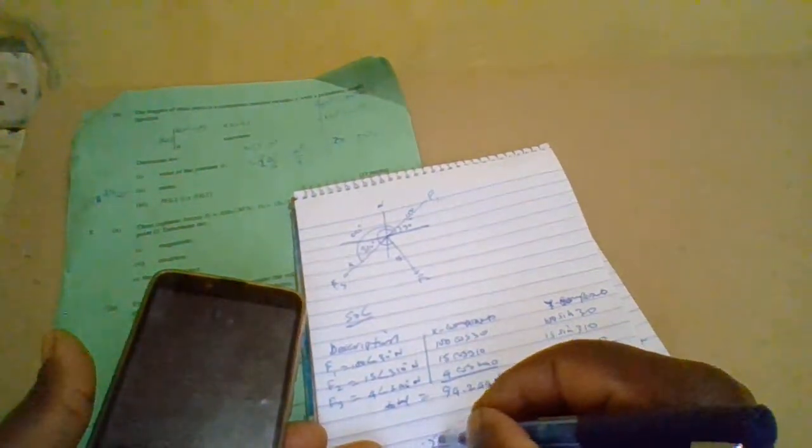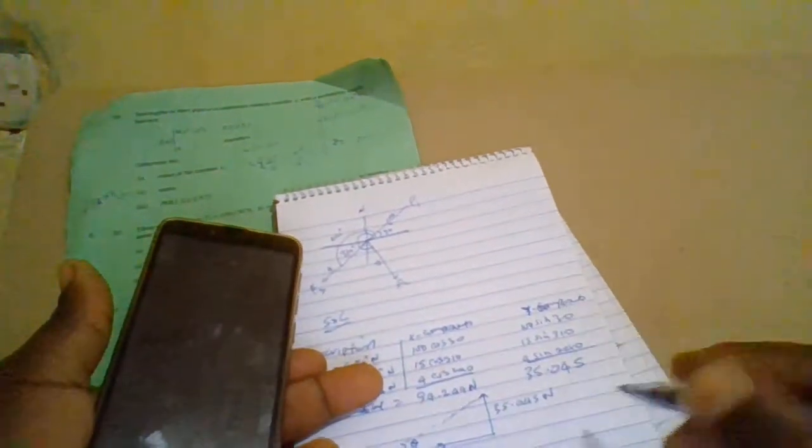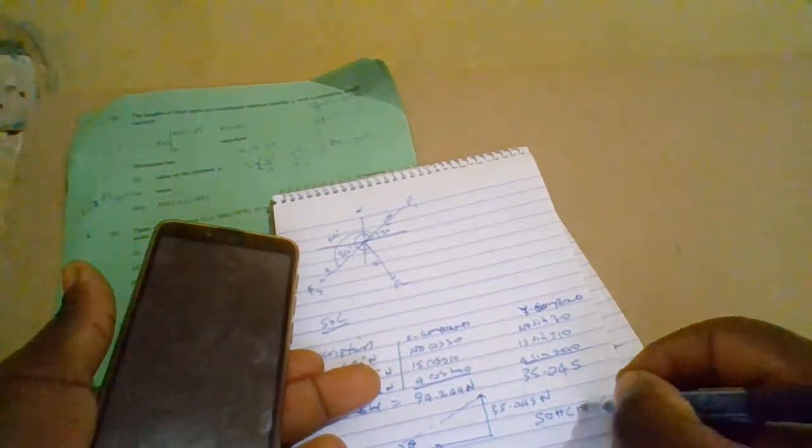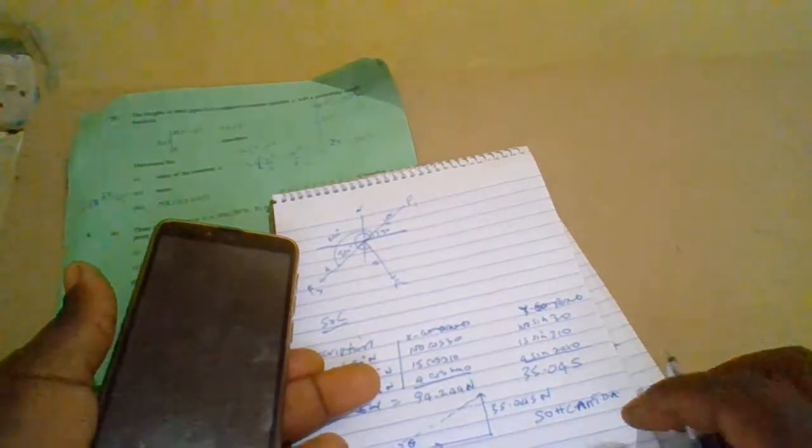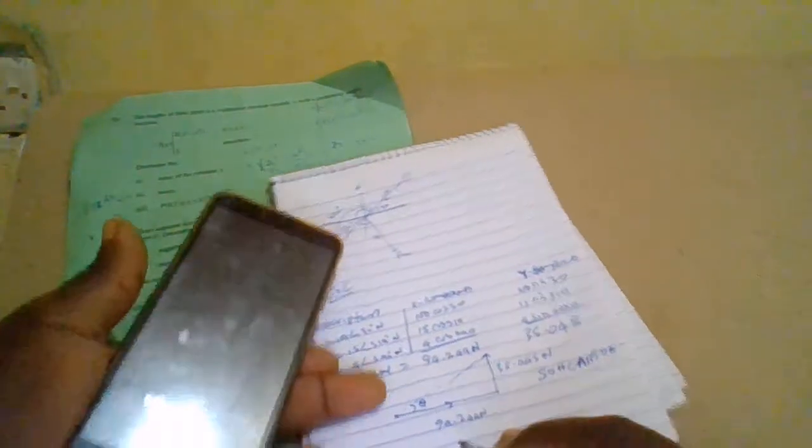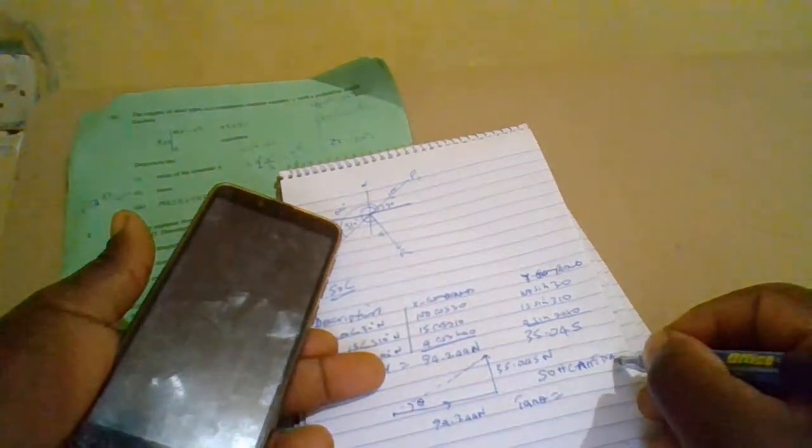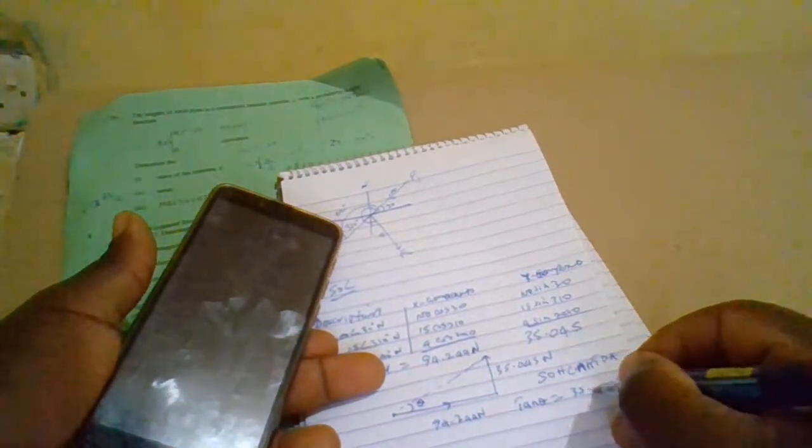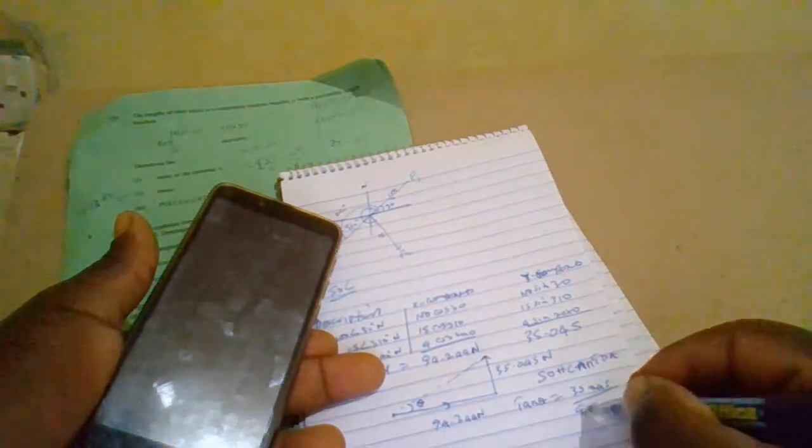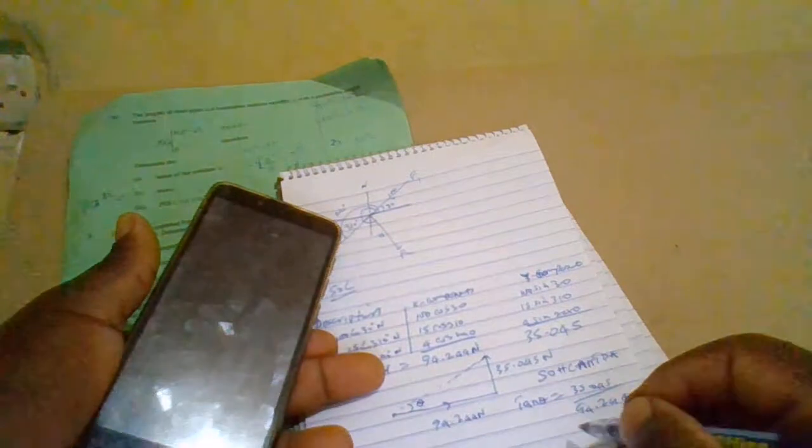So the resultant of the two forces. This is angle theta. So let's find angle theta. If you want to get this angle we shall have tan theta equals to opposite over adjacent. Opposite is 5.045, adjacent is 94.244.